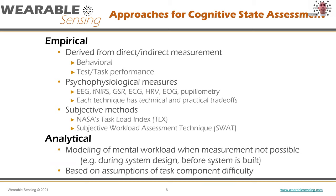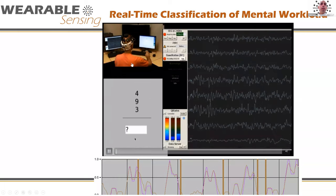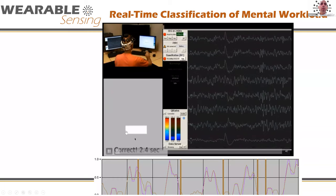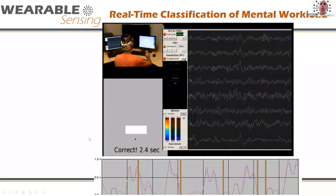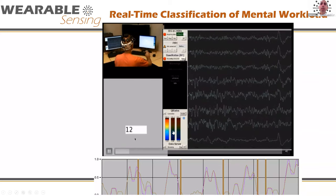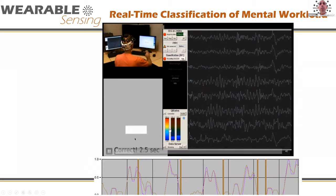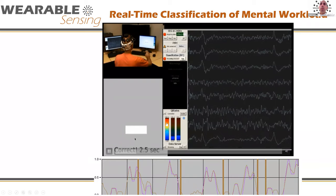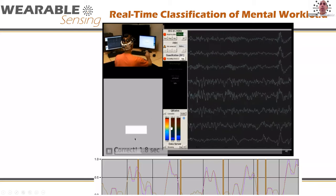That's cognitive states at a high level. Now let's dig into how we do it. Before I do, I just want to show you an example running in real time. This subject is doing math problems on screen. He just did a first one-column addition task and got it right in 2.4 seconds. On the right side is his EEG, and in the middle is the output of our cognitive state gauge, which we call Q-State.